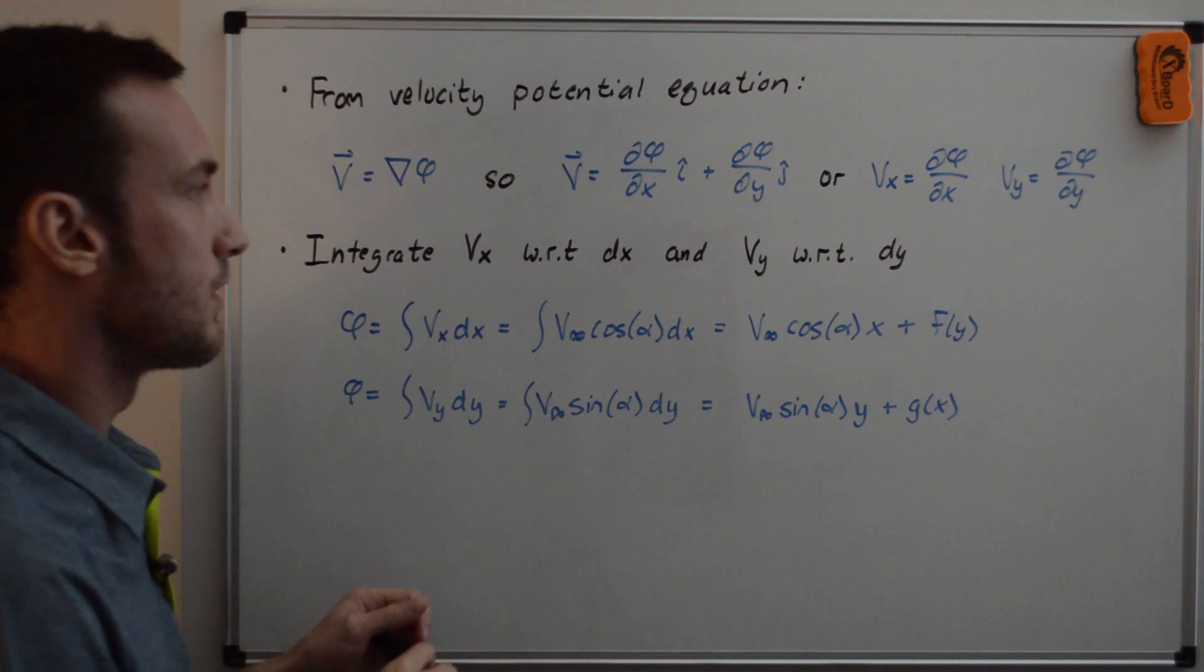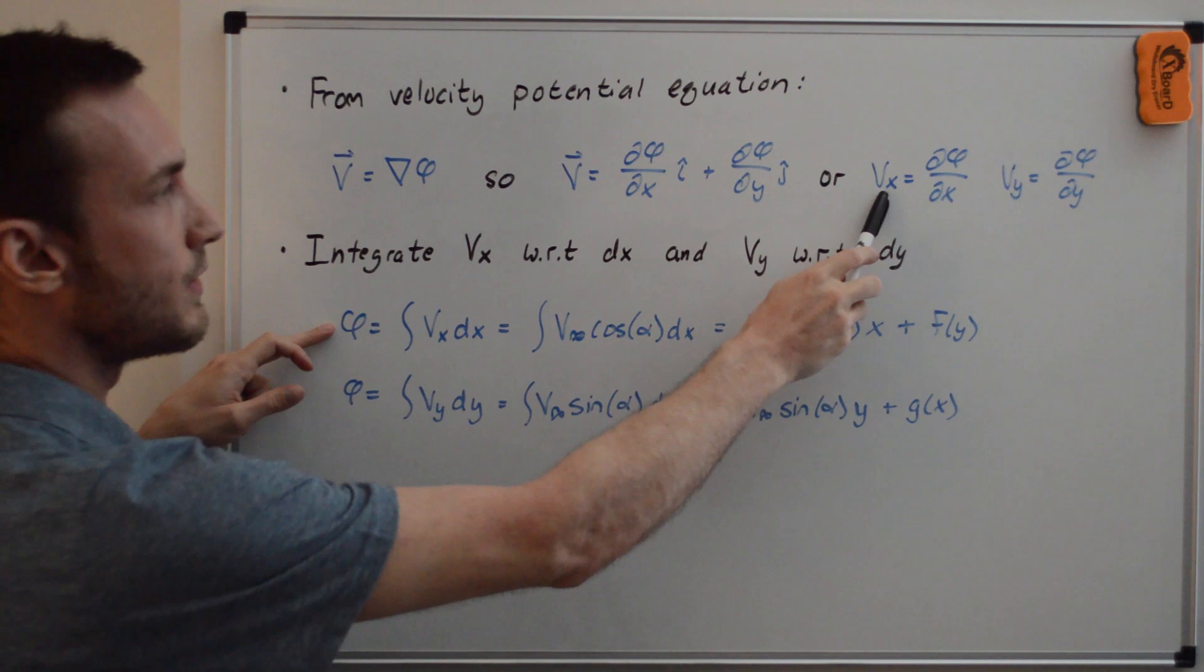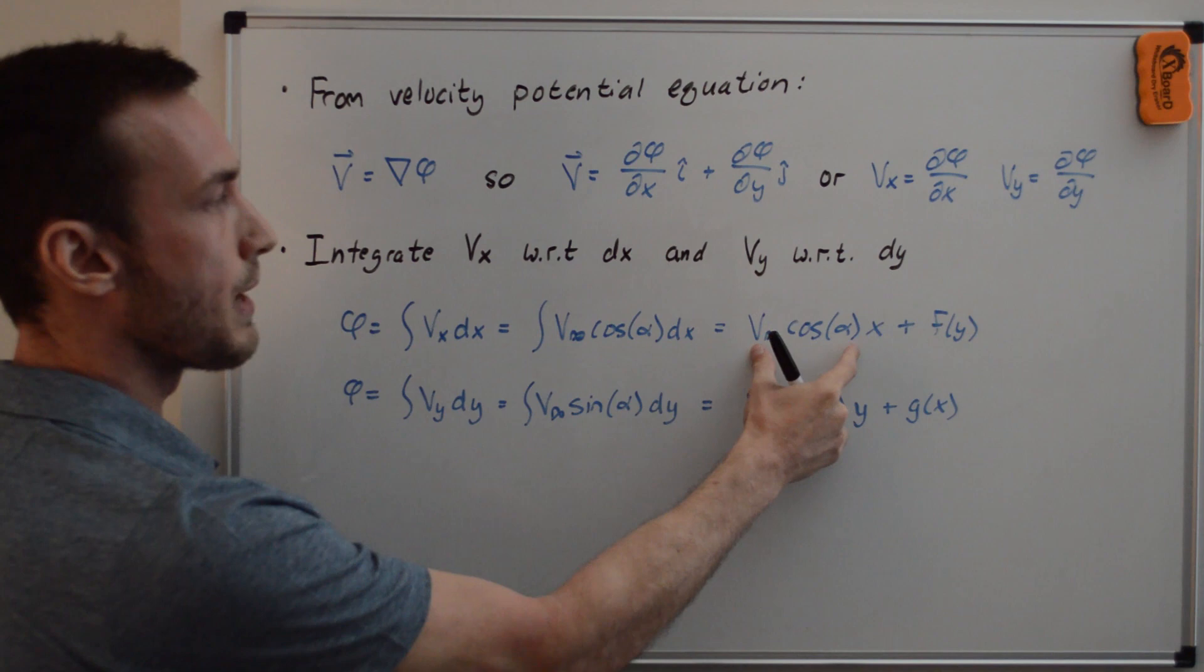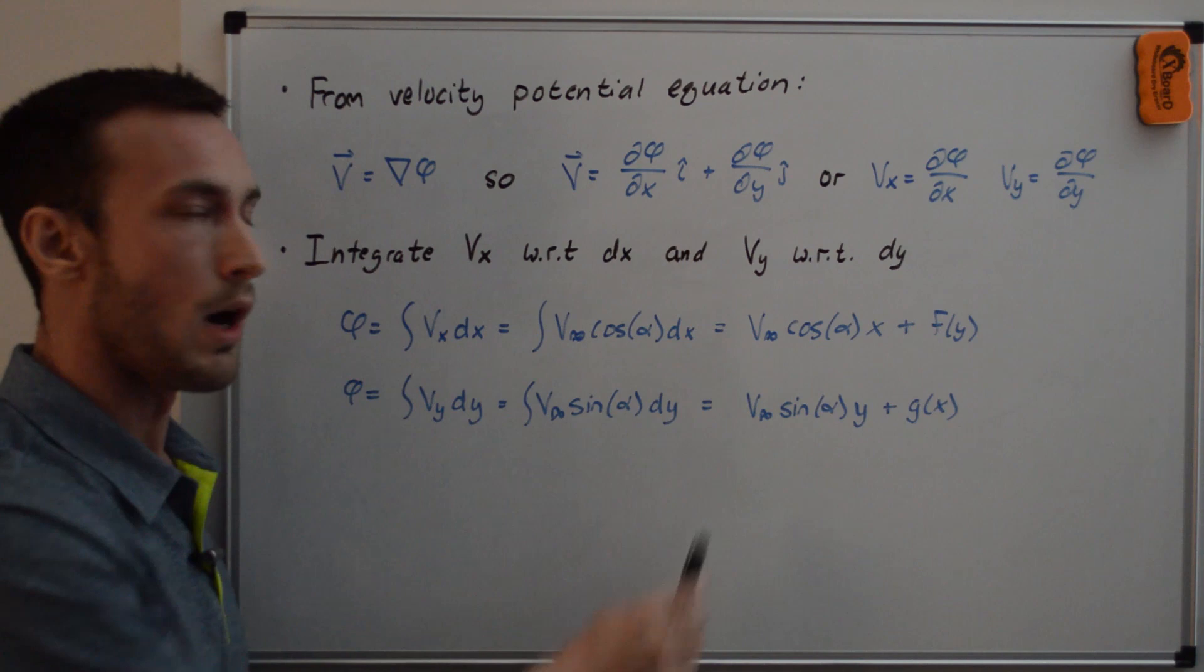The way you can think about this making sense really quick is to say, well, now we have phi here, and we should be able to take the derivative of phi with respect to x and get vx. So if I take this here and take the derivative with respect to x, we get v infinity cosine alpha, and this function of y is not a function of x, so the derivative of that will be zero, and we do in fact get back vx is equal to v infinity cosine alpha.